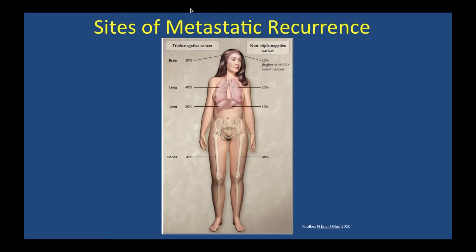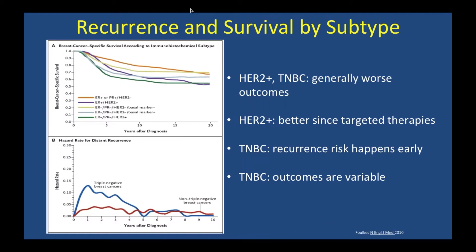These cancers tend to spread differently. Triple-negative has more tendency to go to brain and lung — 30-40% — while non-triple-negative kind more likely goes to bones and tends to be less of an issue for a longer time. Survival curves after diagnosis also differ by subtype. For triple-negative breast cancer, the peak time of recurrence is early — around two years after diagnosis — but if it doesn't come back by about five years, chances are good that it's gone. Non-triple-negative cancer is a slower process before we can say it's not coming back.